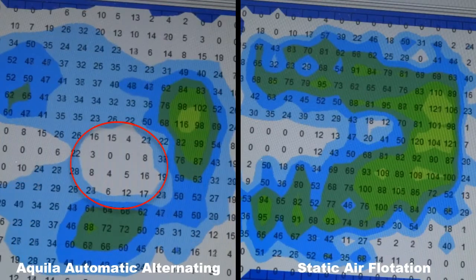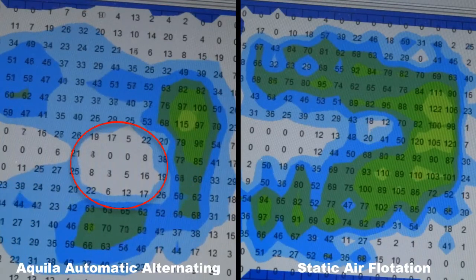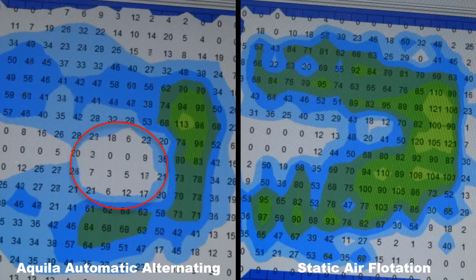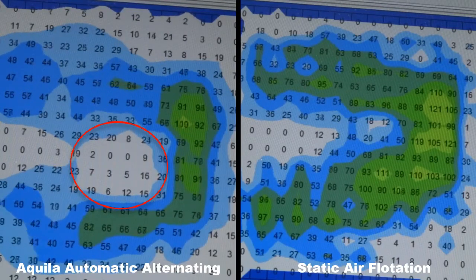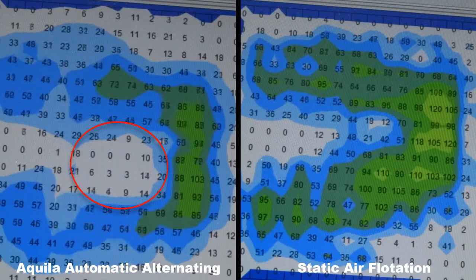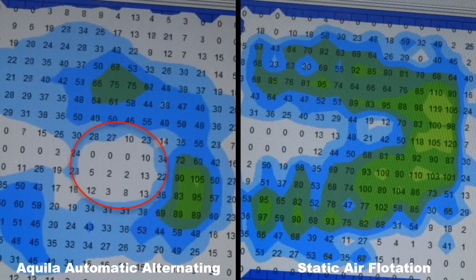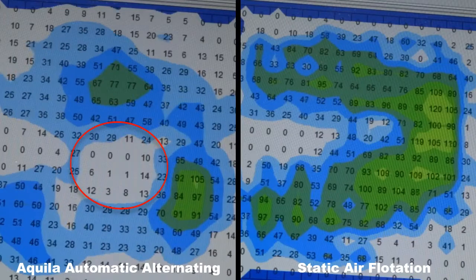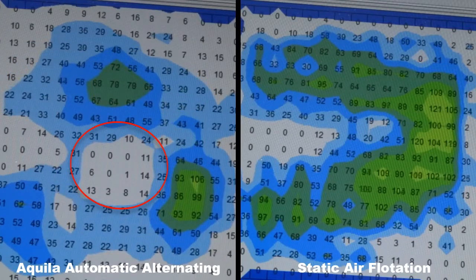It automatically inflates and deflates two groups of internal air bladders to create movement without any help of the person on it. The movement, the alternation, is automatic and continuous while the system is being used. You can see the image on the left changing as the Soft-Tack cushion's automatic action takes place.